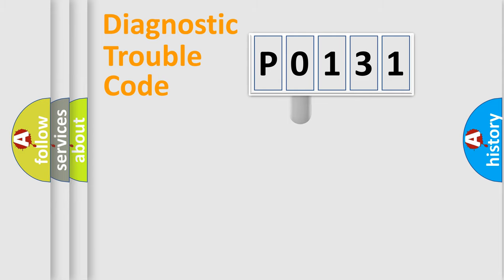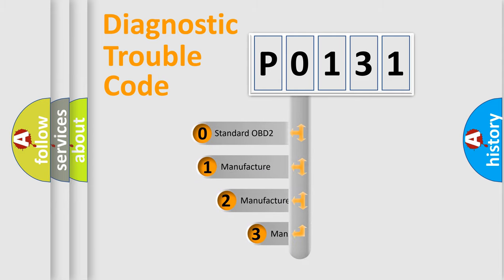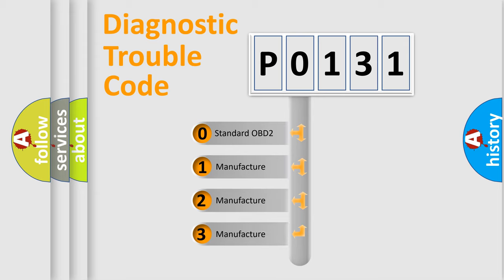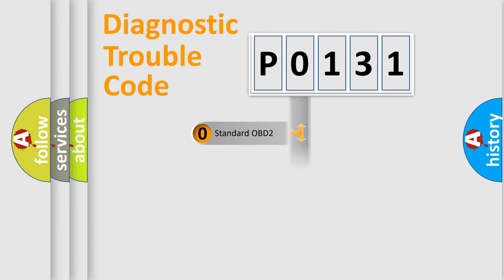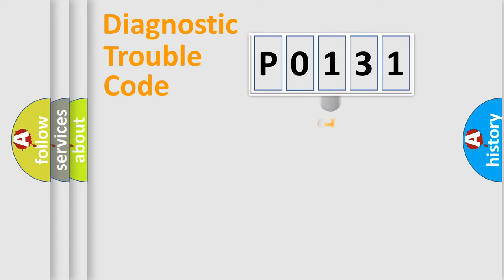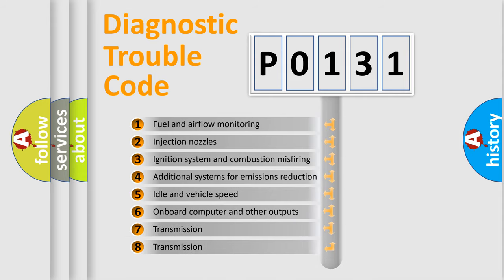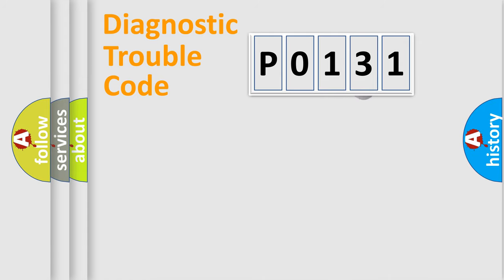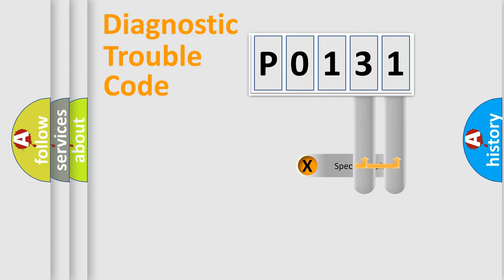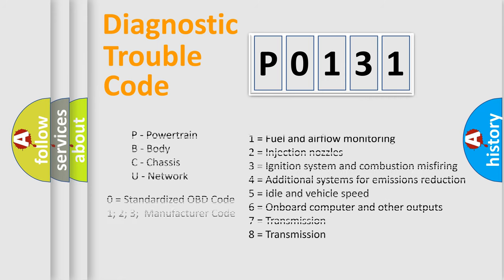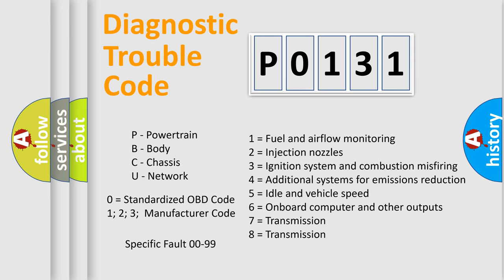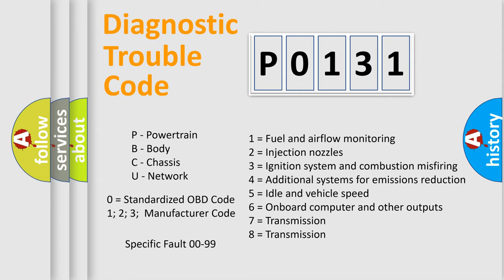This distribution is defined in the first character of the code. If the second character is expressed as zero, it is a standardized error. In the case of numbers 1, 2, or 3, it is a more manufacturer-specific expression of a car-specific error. The third character specifies a subset of errors. Only the last two characters define the specific fault of the group. This division is valid only if the second character is expressed by the number zero.